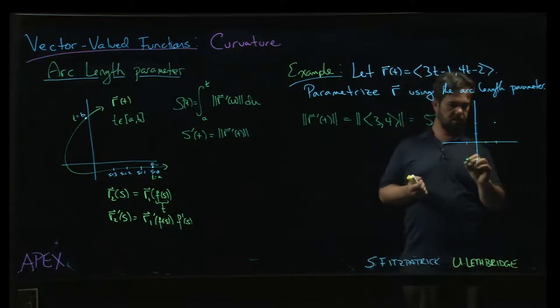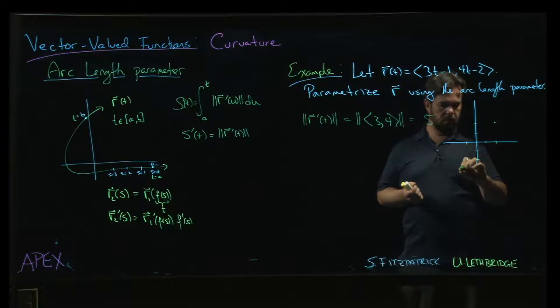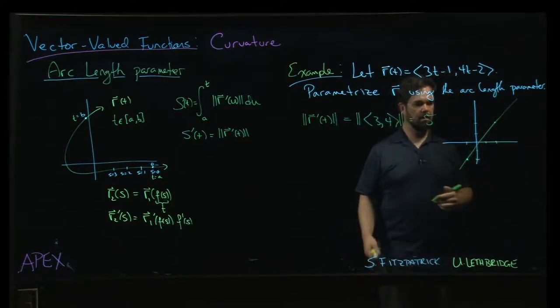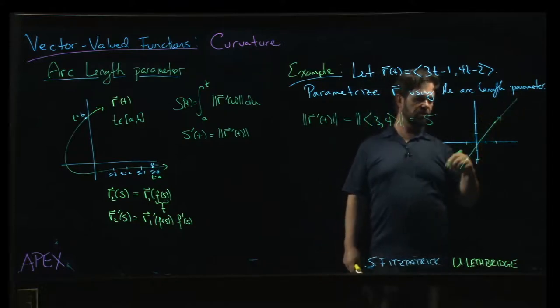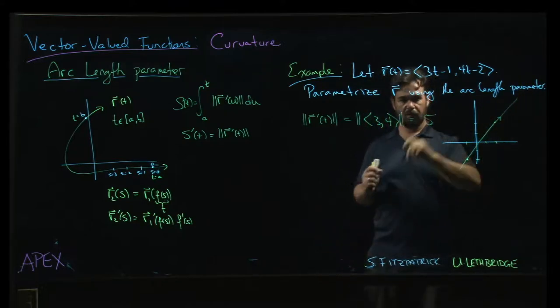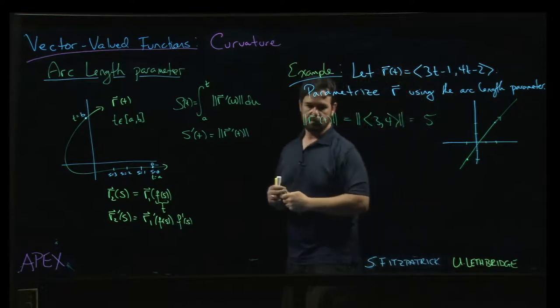Okay. So however you want to do it. But yes, there's our line. And so we have a line that's traversed as t increases and we move along that line at a constant speed of 5.